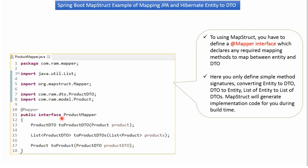Here you can see the interface ProductMapper, which is a Mapper interface. It has method signatures to convert Product to ProductDTO, convert a list of Products to a list of ProductDTOs, and convert ProductDTO to Product. What MapStruct will do is generate the implementation of this code during build time.